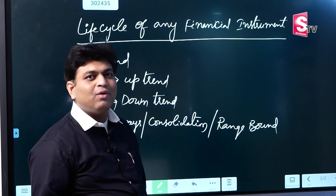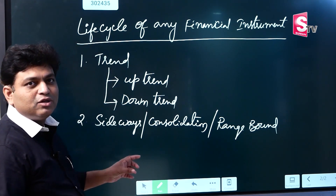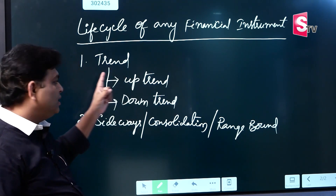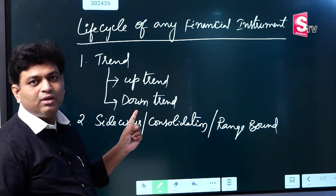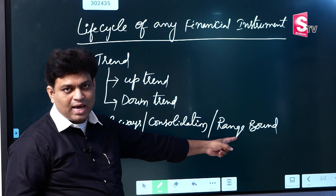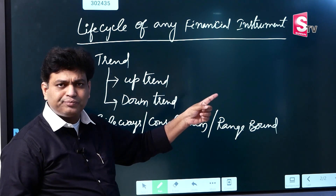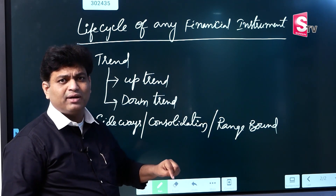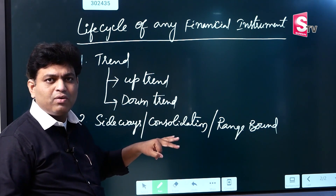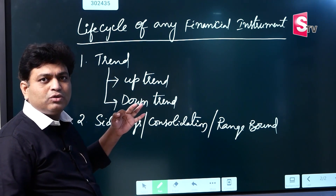A life cycle applies to any financial instrument. That particular counter is either trending or sideways. Sideways, consolidation, and range-bound all mean the same thing. We are going to talk about the trend, which is either an uptrend or a downtrend.